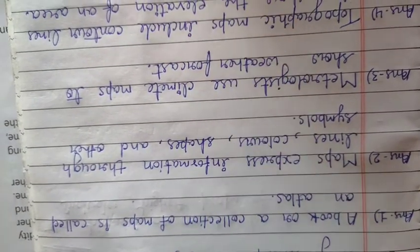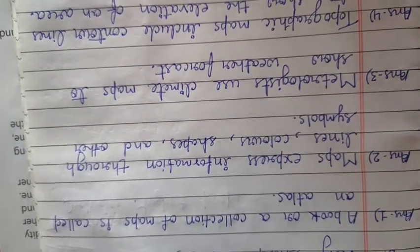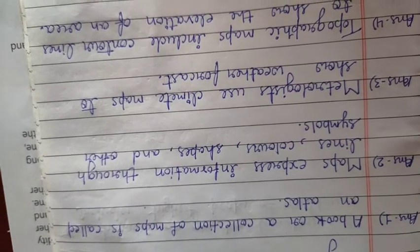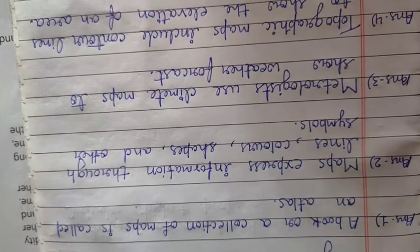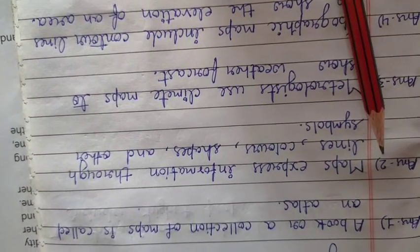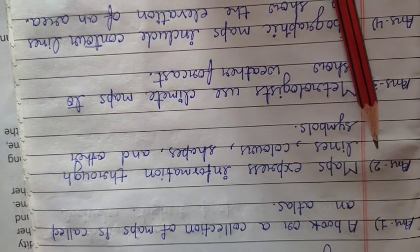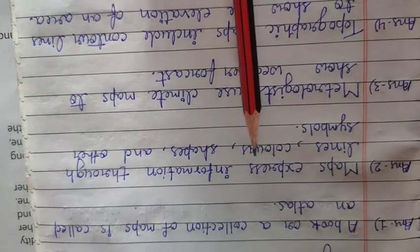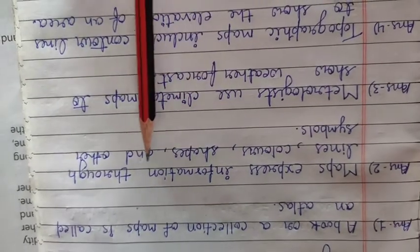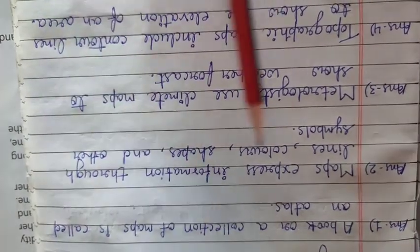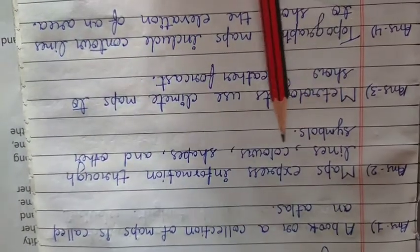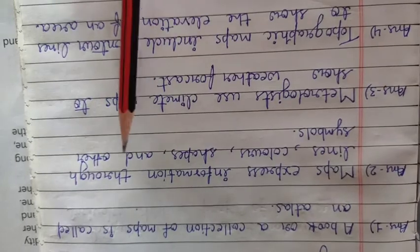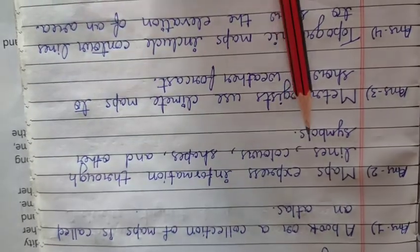Question number 2: how do maps express information? Answer number 2: maps express information through lines, colors, shapes and other symbols.